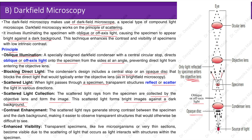Contrast enhancement: the scattered light rays generate strong contrast between the specimen and the dark background, making it easier to observe transparent structures that would otherwise be difficult to see. Enhanced visibility: transparent specimens like live microorganisms or very thin sections become visible due to the scattering of light that occurs as light interacts with structures within the specimen.